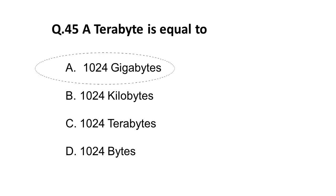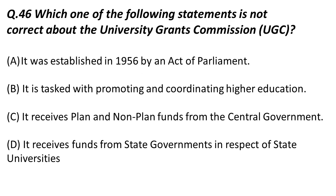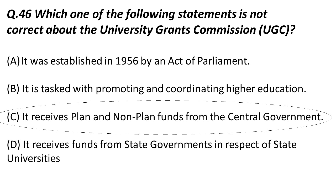Next question: which of the following statements is not correct about the University Grants Commission? Statement A — it was established in 1956 by Act of Parliament: correct. Statement B — it is tasked with promoting and coordinating higher education: correct. Statement C — it receives plan and non-plan funds from the central government: this is a wrong statement. The correct answer identifying the false statement is C.